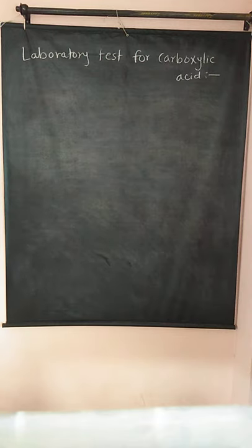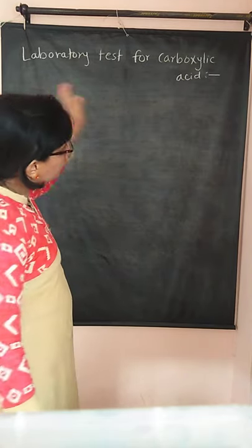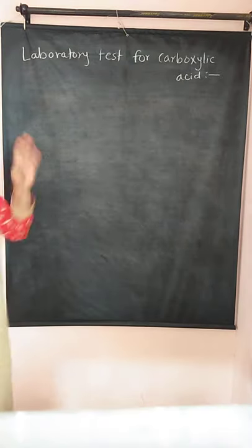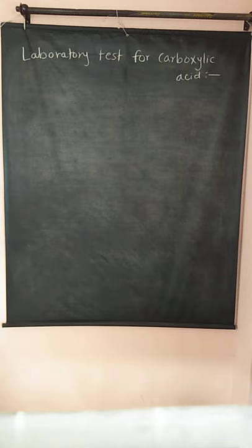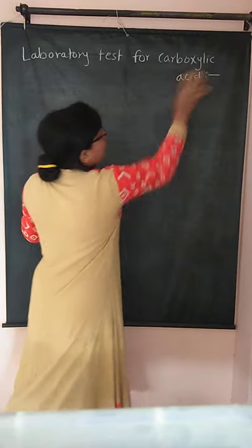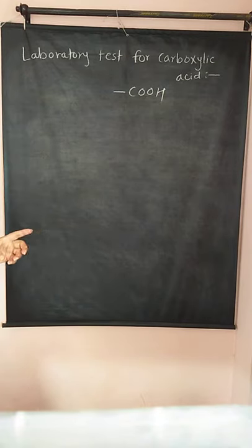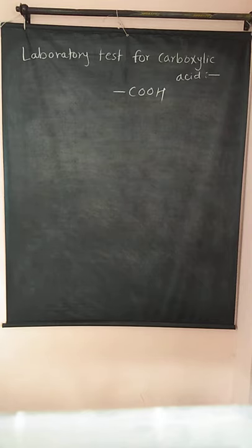Last time we studied the acidic character of carboxylic acids — what factors and groups are responsible for increasing the acidic character. Today we are going to study the laboratory tests for carboxylic acids, or specifically for the carboxylic group. The COOH group, if present in any substance, will cause that substance to show different laboratory tests.